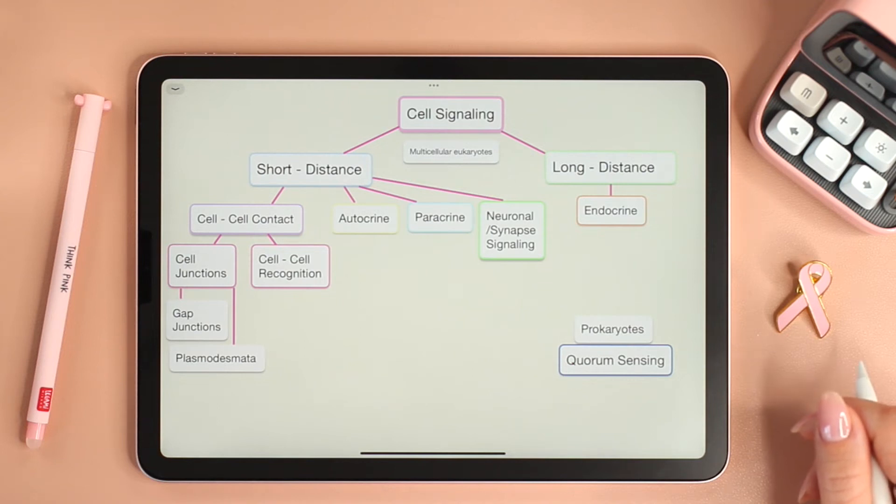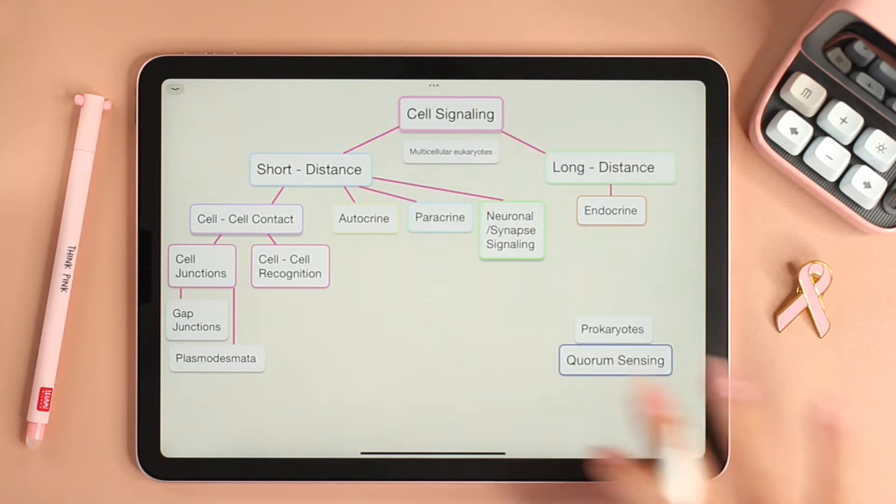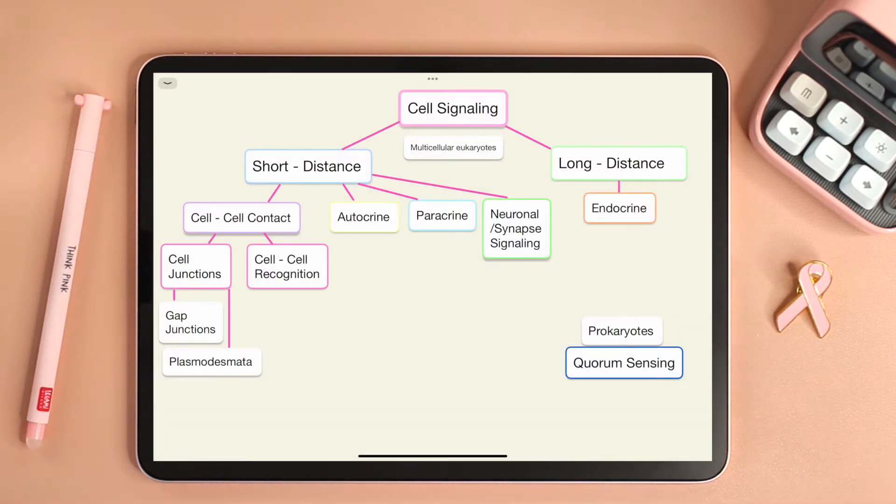Hello everyone and welcome back to Willow's Notes. Today we will start a series of videos in which we will talk all about cell signaling. Once all the videos are uploaded you can find them under the cell signaling playlist. This playlist will be especially important for AP bio students as it will cover unit 4.